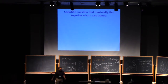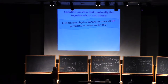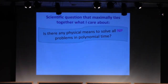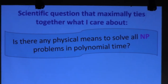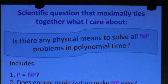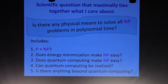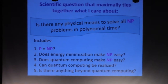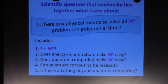If I had to pick a single scientific question that maximally ties together all the different things I care about, I would pick: is there any physical means whatsoever to solve NP-complete problems, or equivalently to solve any NP problem in polynomial time? This single question includes within it at least five different sub-questions, any one of which could occupy someone for their whole career. First of all, there's the famous question: does P equal NP — could there just be a polynomial time algorithm on a conventional computer that solves all NP-complete problems? Nobody has proved that that's impossible.